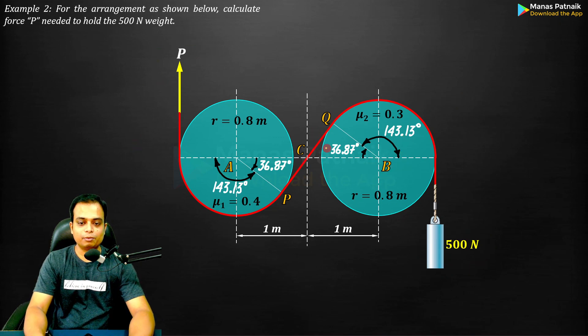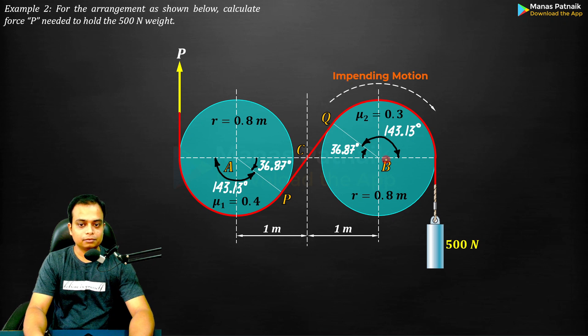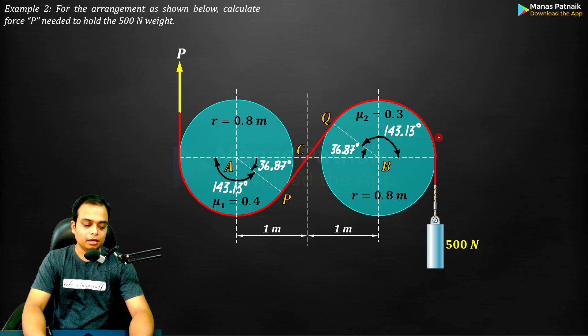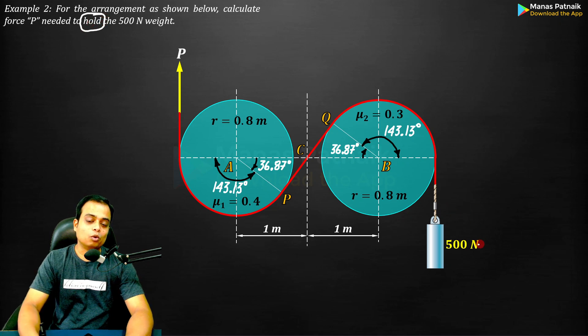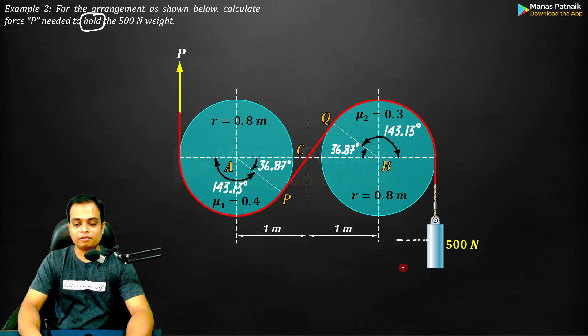Start by creating the free body diagram of the rope with drum B. This is the impending motion. The reason is very simple - it's mentioned very clearly that we need to hold the 500 newton weight. To hold the 500 newton weight, I need to keep it at this level, neither down nor up, so I have to apply some force here.